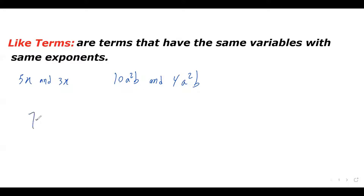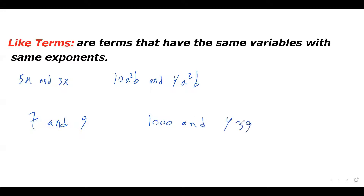Let's say 7 and 9. These two terms are constant terms — we do not have any variables here. All constant terms are like terms, so we can say 7 and 9 are like terms. It doesn't matter what the numbers are; for example, 10 and 49 are also like terms because both are constant terms with no variable.